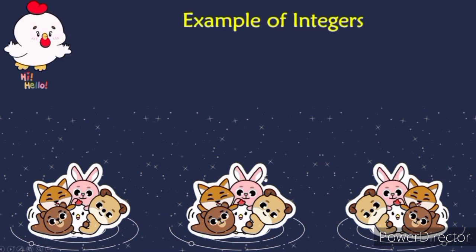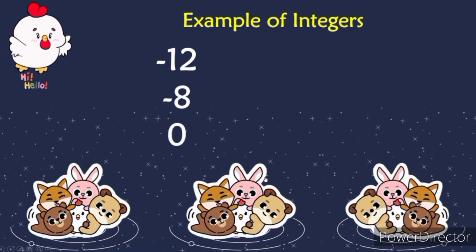Let's give example for integers. We have negative 12, negative 8, and 0. We also have 1, 15, and 600.